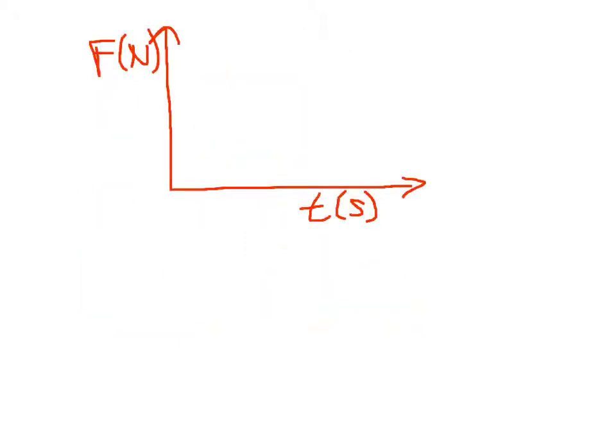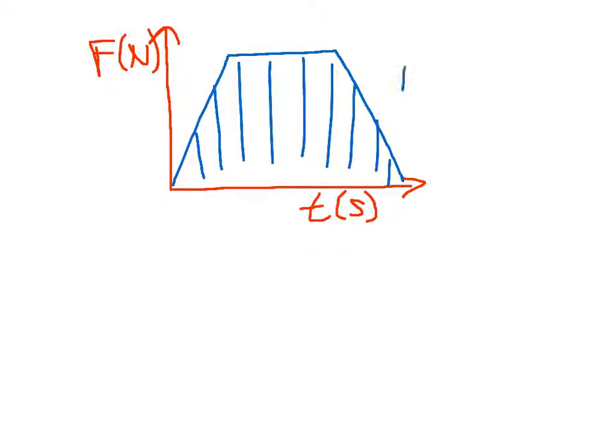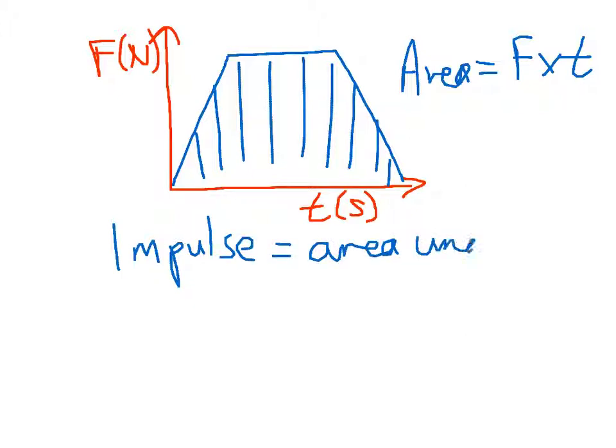Impulse, it's common for us to graph force and time, and so you'll often see force time graphs, something like this. And what you get when you calculate the area under this force versus time graph is a product of force times time, which is impulse. And so we can define impulse as the area under a force versus time graph.